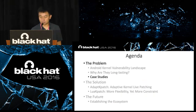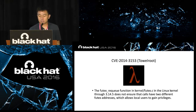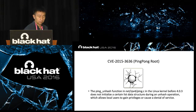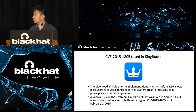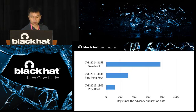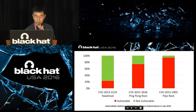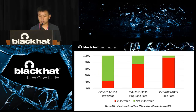Let's do some case studies. The Towelroot vulnerability is very famous in the Android area — it was disclosed two years ago. Pingpong root was disclosed one year ago, and CVE-1805 was disclosed this year. Towelroot has been disclosed for almost 800 days, yet there are still more than 20% of devices that can be rooted by Towelroot. This is very severe.